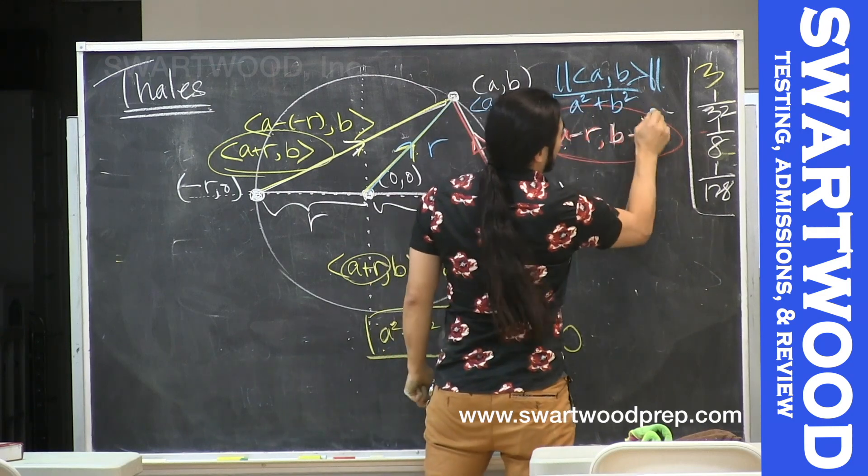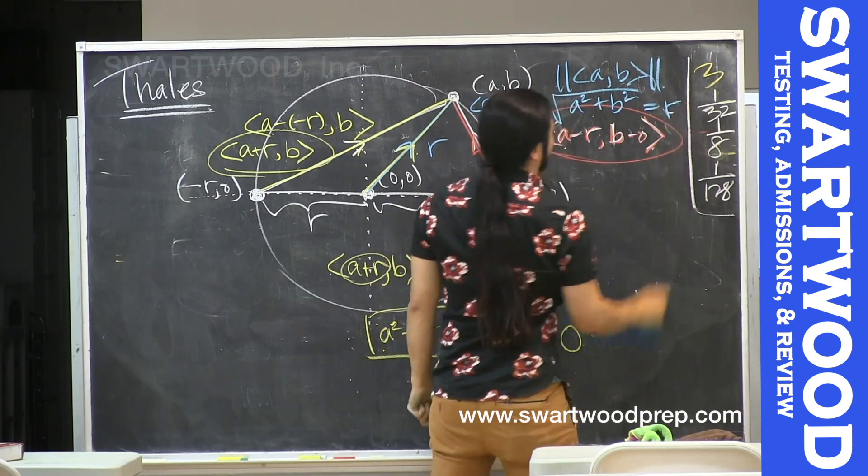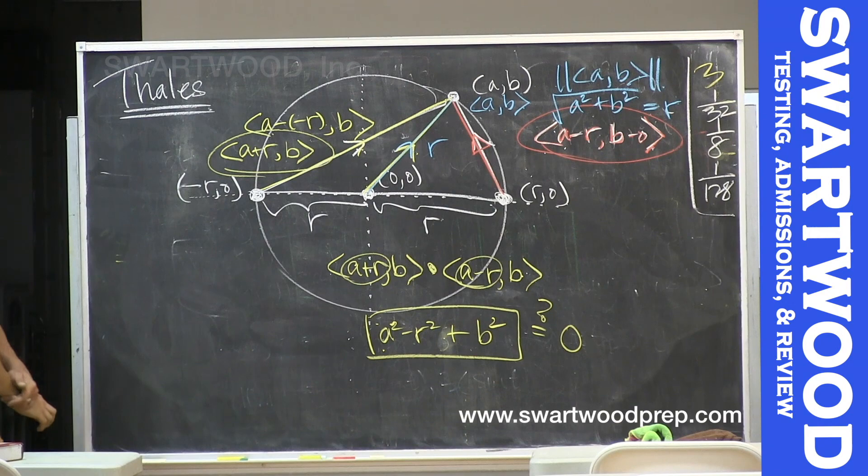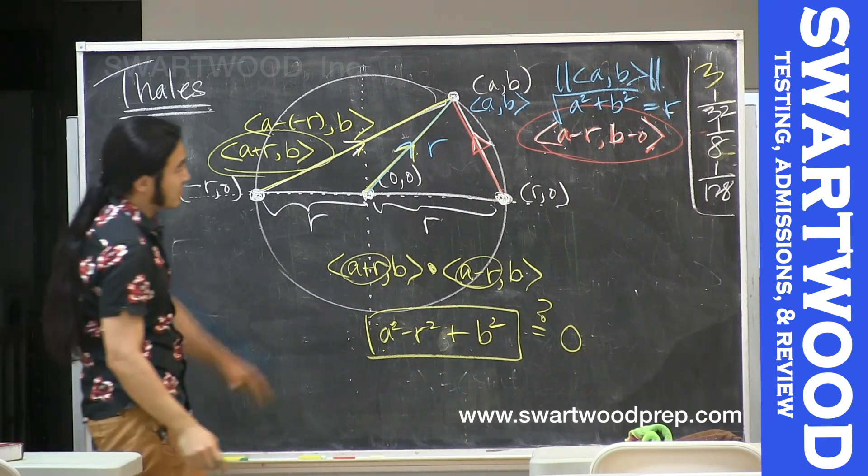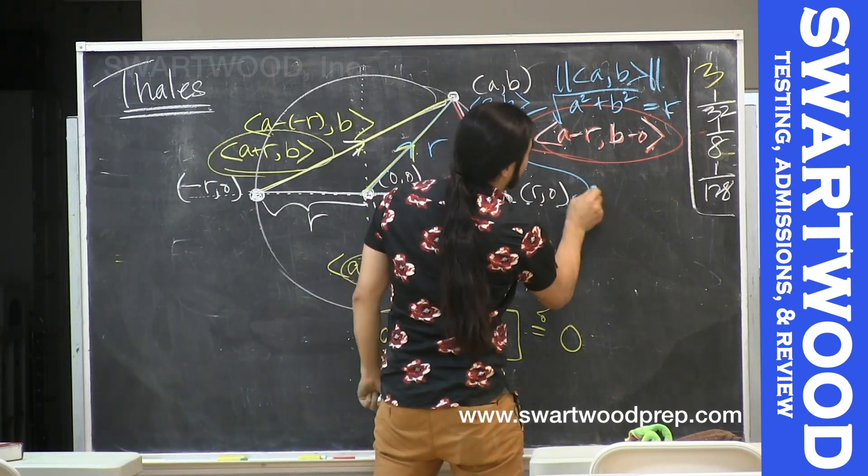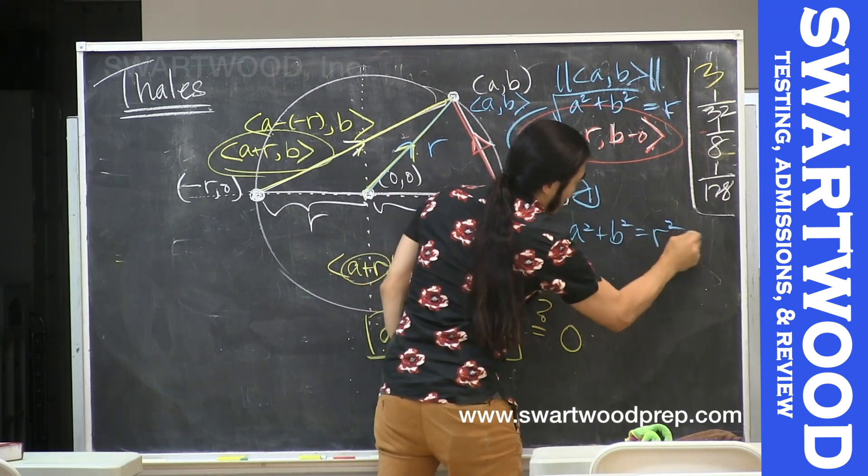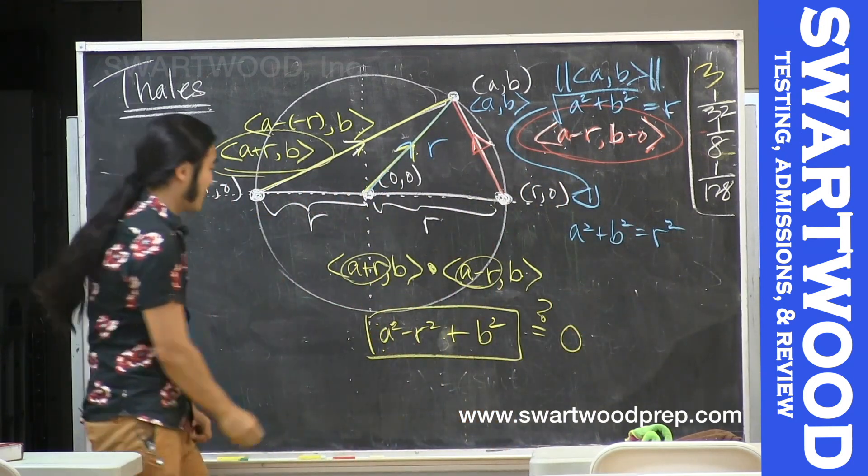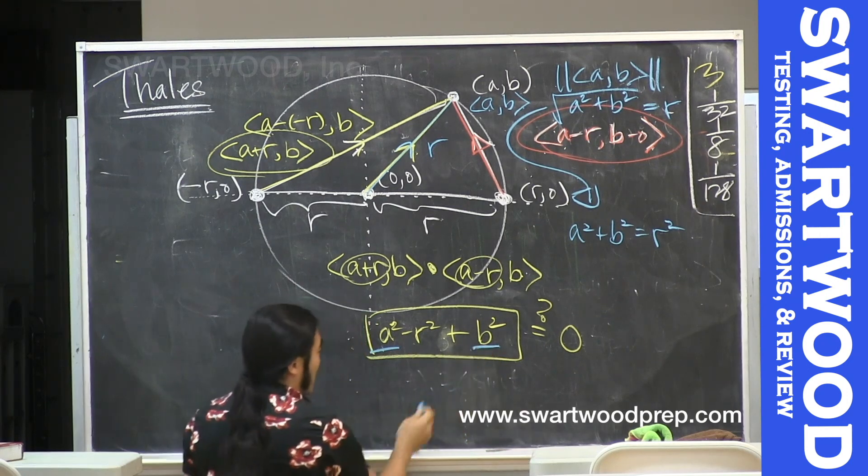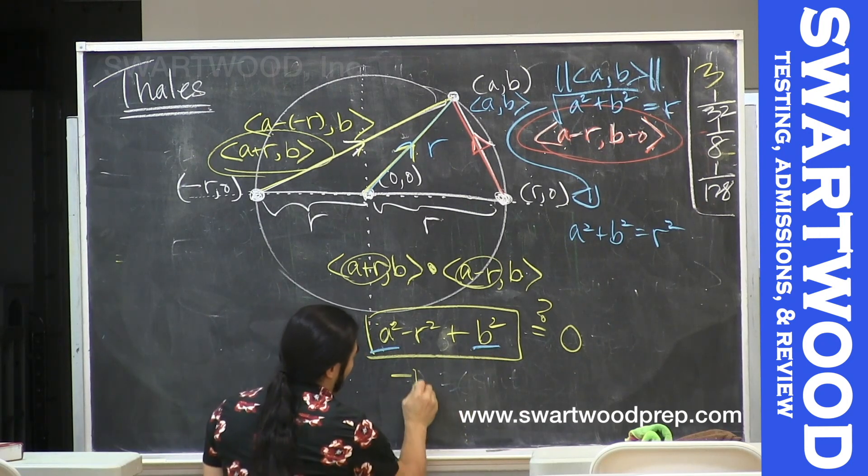Not too bad right? So let's work this. This equation gives us, square both sides, a² + b² = R².